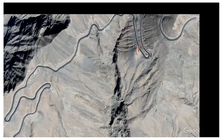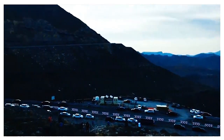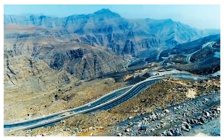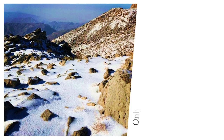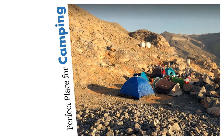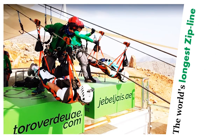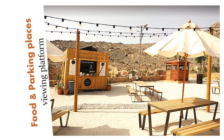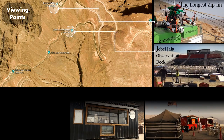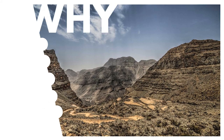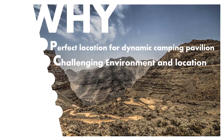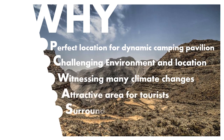Jebel Jais is part of the Hajar Mountains with a height of 1,934 meters. Many tourists love to take a road trip and visit due to the activities located on the viewing point along Jebel Jais. The map shows the location of open areas along Jebel Jais with activities and our chosen site. Many reasons played a big role in choosing Jebel Jais, for example the challenging mountain environment, response to many climate changes, and the beautiful surrounding nature.